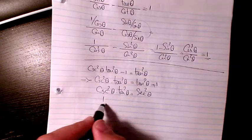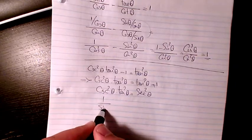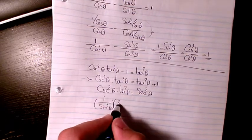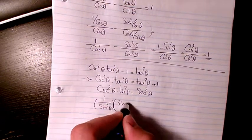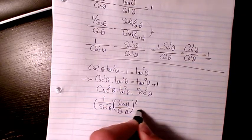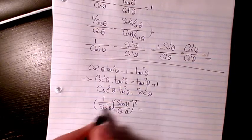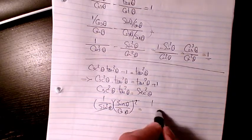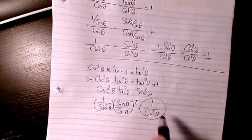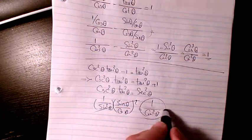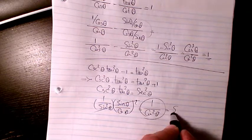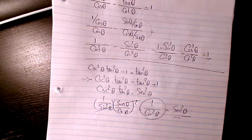Cosecant is 1 over sine squared theta, tan is sine over cosine — these two cancel out, and the answer will be 1 over cosine squared theta. And as we know, 1 over cosine squared is the same as secant squared theta.